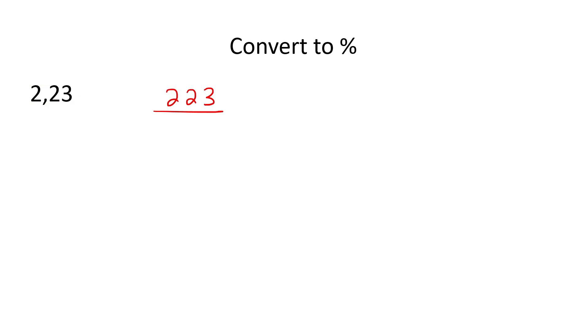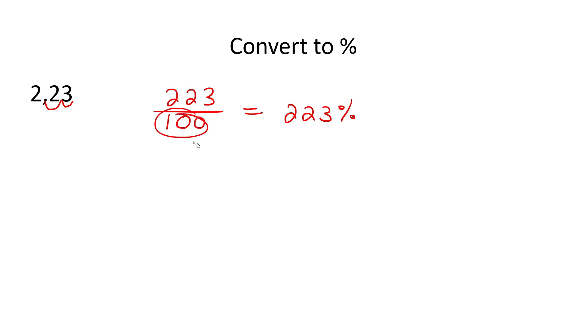Now here's an interesting one because the number is not a zero — but that's okay. All you do is write the number out: 223 over. Starting from the back, how many decimal places? That's two places — one, two — so put two zeros and a one. When you have 100 at the bottom it's very easy to go to a percentage, because it just becomes 223 percent. Whenever you have 100 at the bottom you can go direct to a percentage.